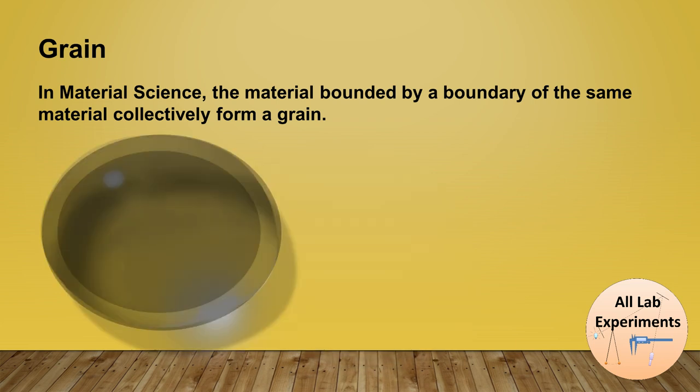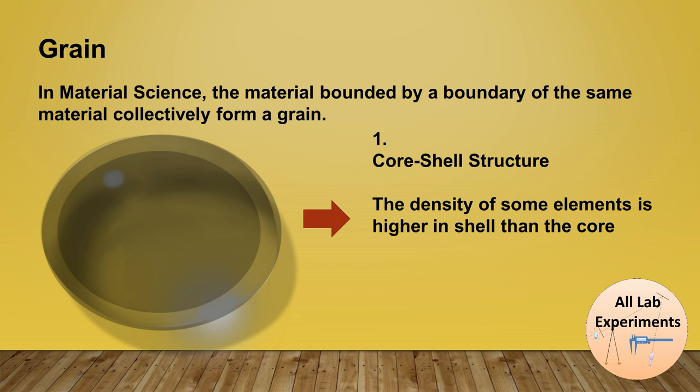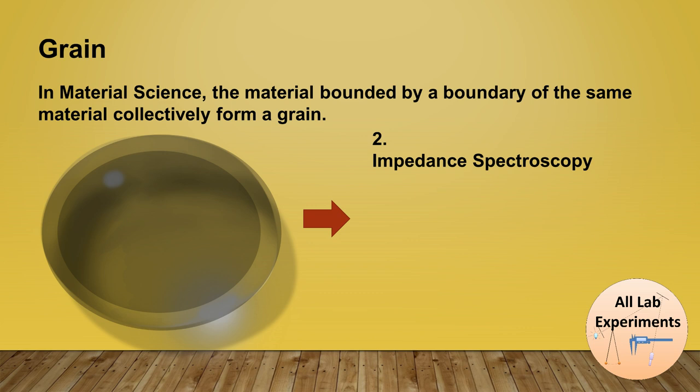So there are substantial evidences generally studied as core-shell structure. The density of some elements is higher in outer shell than the core, or also in impedance spectroscopy it has been observed that the grain boundaries are more resistive than the bulk.